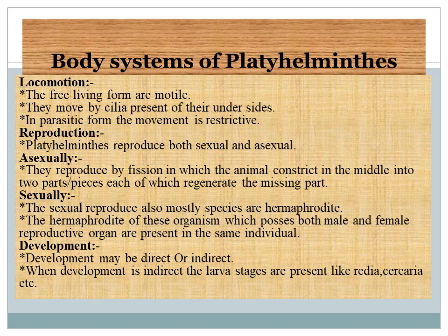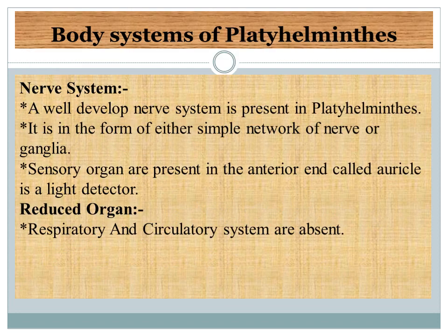Development may be direct or indirect. When development is indirect, larvae are present, and these larvae are like cnidarian larvae known as planula. Nervous system: a well-developed nervous system is present, more advanced than in cnidarians. It is in the form of either a simple network of nerves or ganglia. Sensory organs are present in the anterior region called auricles, which are light detectors.